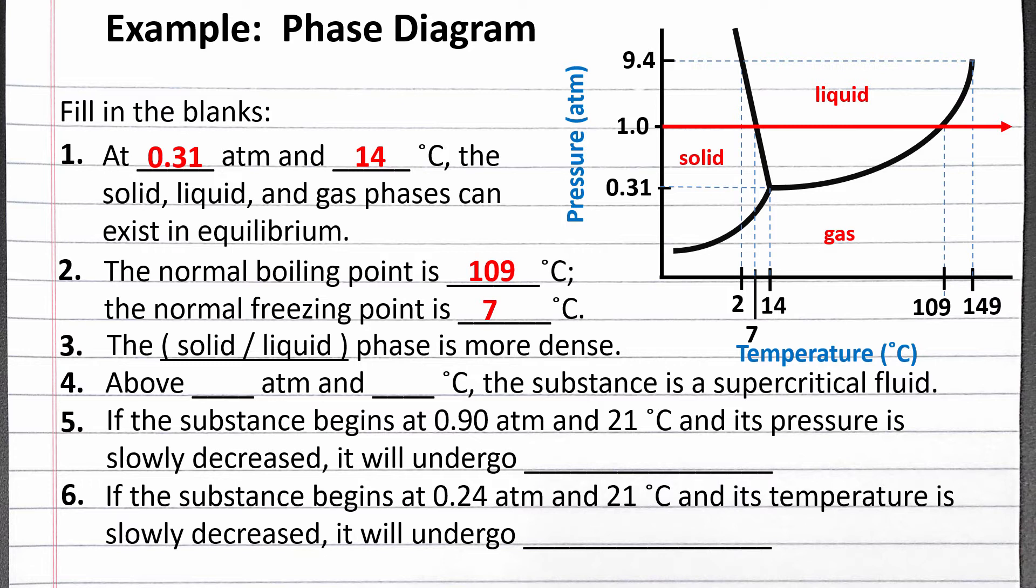Next, we want to determine which phase is more dense, the solid or liquid phase. We can draw a vertical line through the fusion curve, signifying an increase in pressure. The phase that is more dense will be favored with increasing pressure.